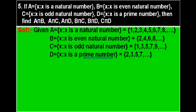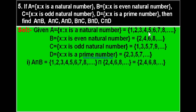We converted all sets from set-builder form to roster form. Now let us find the first part A intersection B. A = {1, 2, 3, 4, 5, 6, 7, 8, ...} intersection B = {2, 4, 6, 8, ...}. Intersection means common elements. You can find 2, 4, 6, 8 in A, so the common elements are {2, 4, 6, 8, ...}. This is A intersection B, which equals set B.